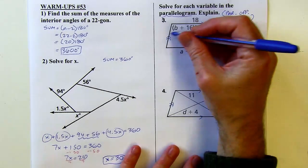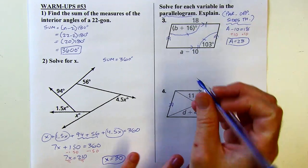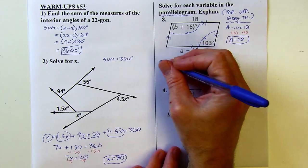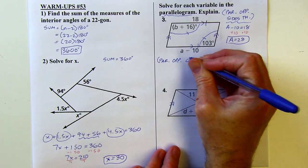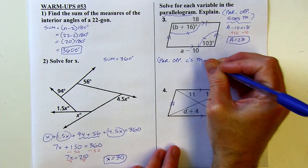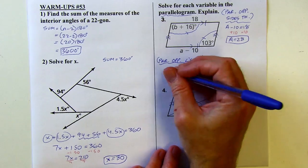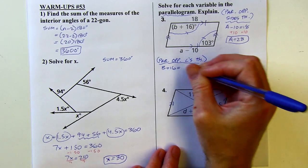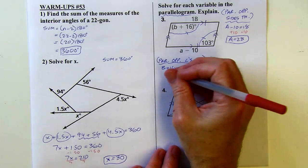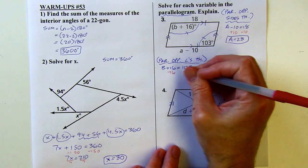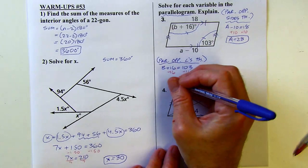And then opposite angles are also going to be congruent in parallelograms. So this is the parallelogram opposite angles theorem. That's going to allow me to say that b plus 16 equals 103. And then b will come out to 87.